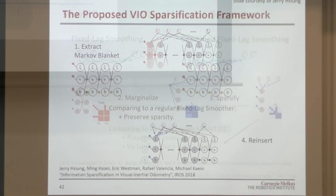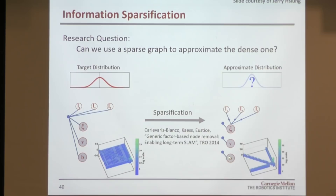Regarding sparsification: we essentially provide a structure for the factor graph — the functions that represent the constraints — and then optimization finds the means and covariances that go into those functions. The choice of which functions to use is an open question; the current structure choice may not be optimal. It would be interesting to optimize the actual structure itself, but we haven't figured out how to do that. For now, we simply provide the framework and the optimization fills in the numbers.